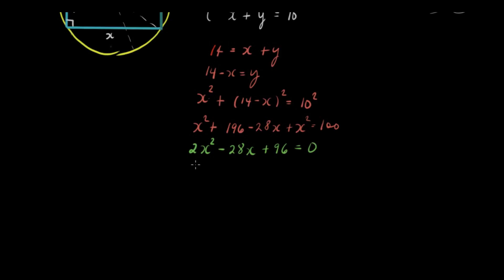Plus 96 is equal to 0. And then if you'll notice you can divide everything by 2. So we'll have x squared minus 14x plus 96 divided by 2 is 48, 48 equal to 0.